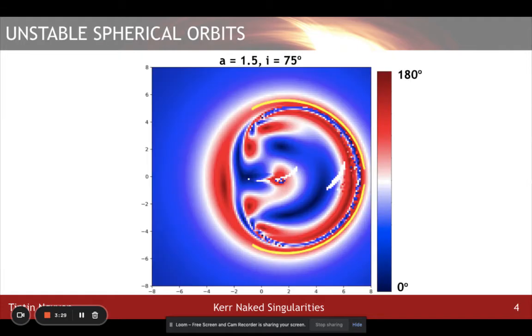For each light ray on the observer grid, I compute the deflection angle. On this visualization with spin 1.5 and inclination angle 75 degrees, the redder region represents higher deflection angle, meaning the photons are coming back to the observer. The bluer region represents a lower deflection angle, meaning the photons are going through the singularity and not coming back to the observer.